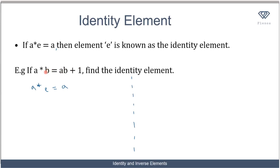In the operation that you are given, you will just replace the second variable by e, which is the identity element. So in this case, a★e equals a. Now I write a★e based on the operation defined by the formula — I'm told that a★b equals ab plus one, so a★e equals ae plus one. Therefore ae plus one equals a.